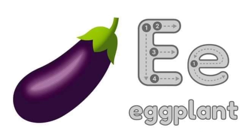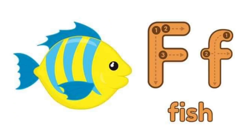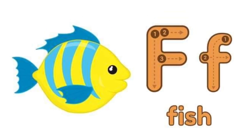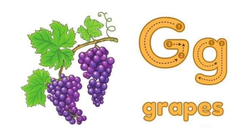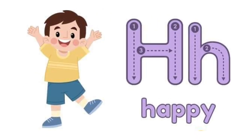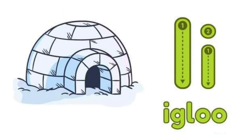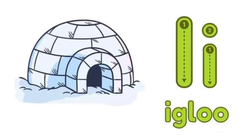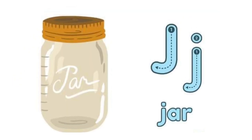E for eggplant, F for fish, G for grapes, H for happy, I for igloo, J for jar.